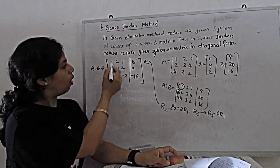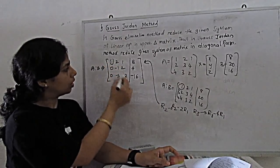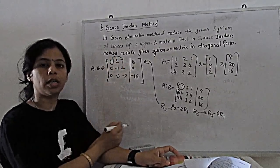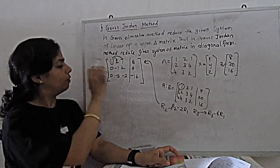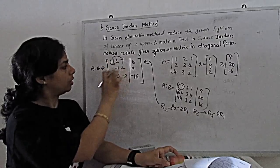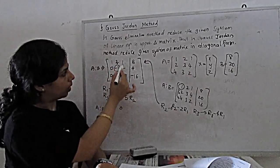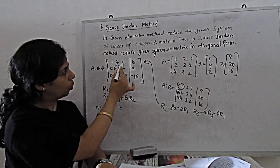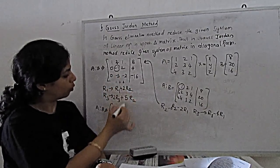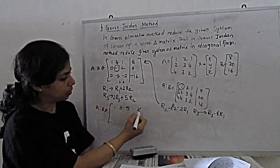Next, with the help of this element, because we need only the diagonal element, we make this and this also equal to 0. So for making this 0, this becomes 2R1 is 1 plus 2, 2 is 4. So this becomes 5. And next is 16.